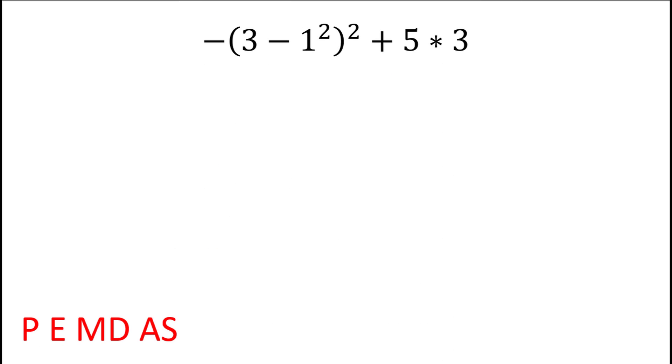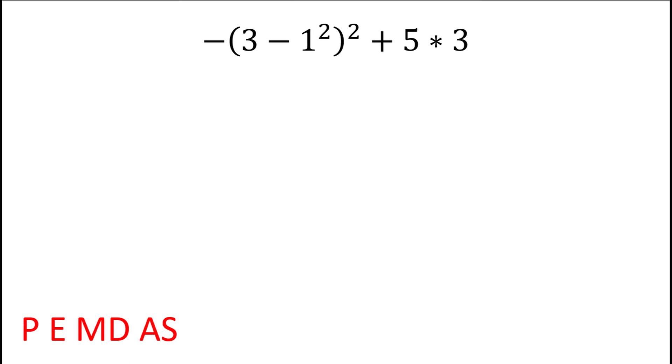Alright, let's try one final example. We have negative 3 minus 1 squared all squared plus 5 times 3. This might look intimidating at first, but let's just take it one step at a time.